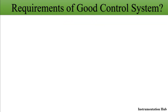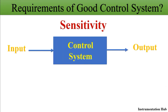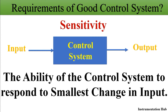The second parameter is sensitivity. On the screen you can see a simple control system — for some input it is giving a particular output. Sensitivity is the ability of the control system to respond to the smallest change in input. When you give the smallest input, the control system should be able to respond and give some output — that is called the sensitivity of the system.